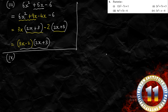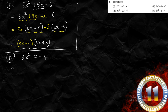Let us now solve the fourth polynomial: 3x² − x − 4. Multiply the first and last term: 3 multiplied by minus 4 gives minus 12. The answer is negative, so one factor will be plus and another factor will be minus. The middle term is negative, so the larger factor will be negative.